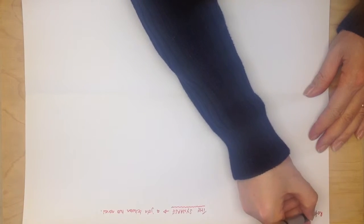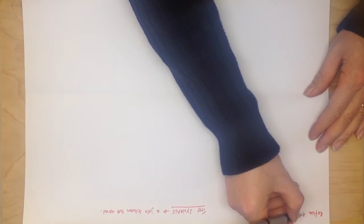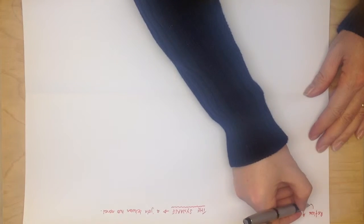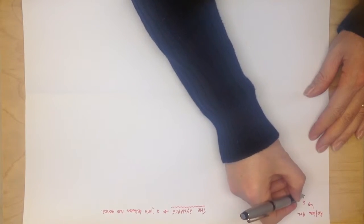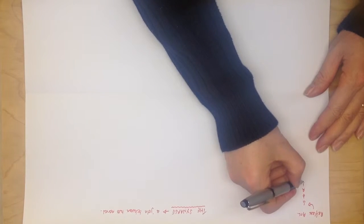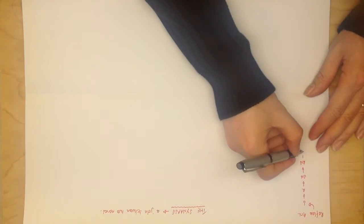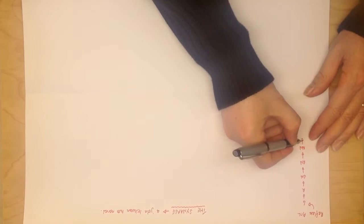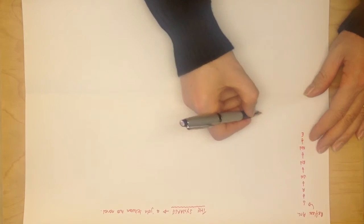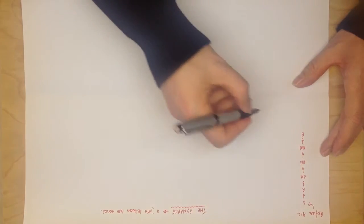So, reflex arc, you should remember stimulus, receptor, sensory nerve, relay nerve, motor nerve, effector. And if you were to draw that, it might look something like this.